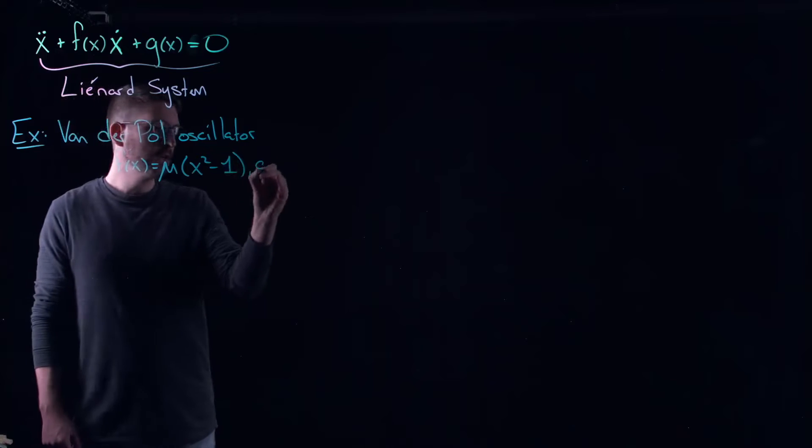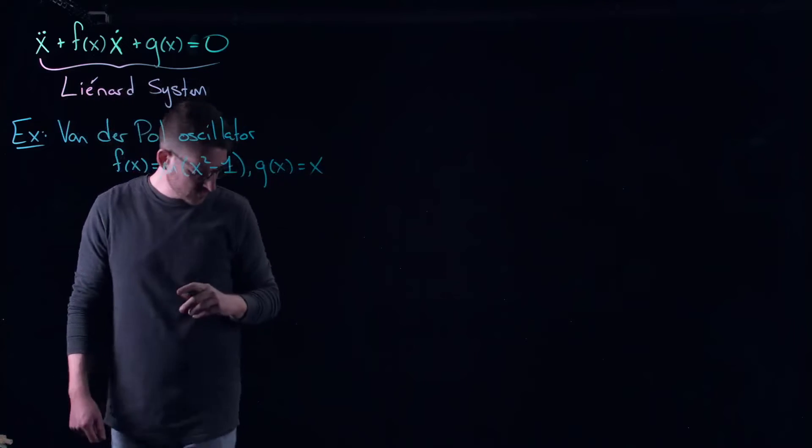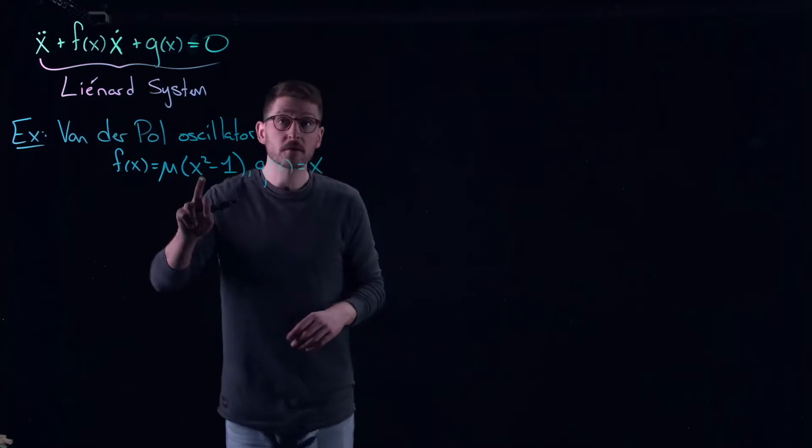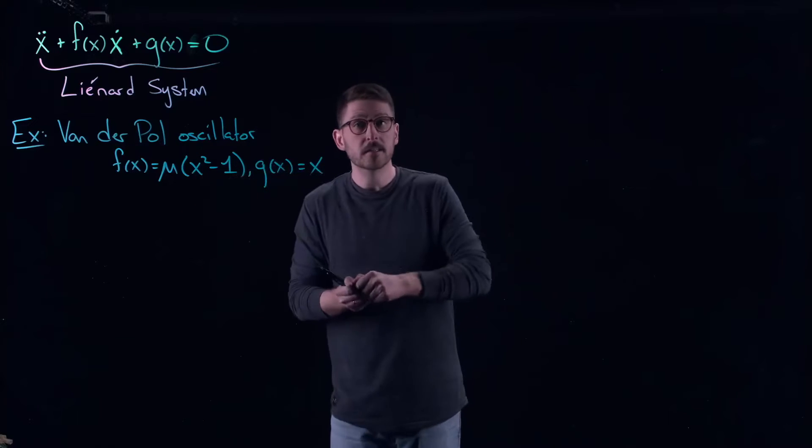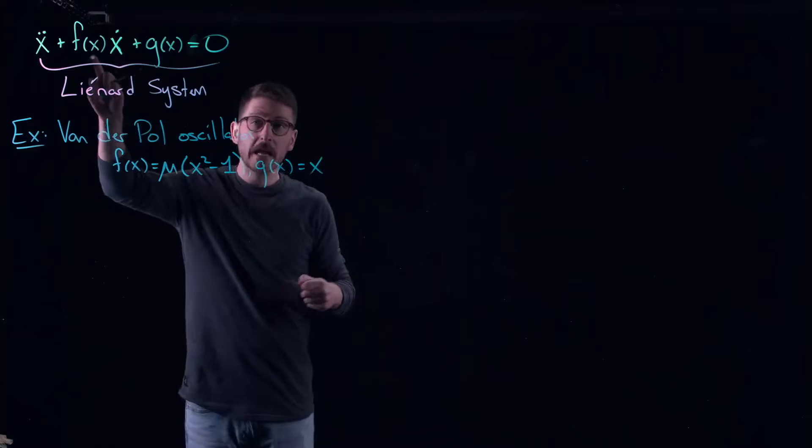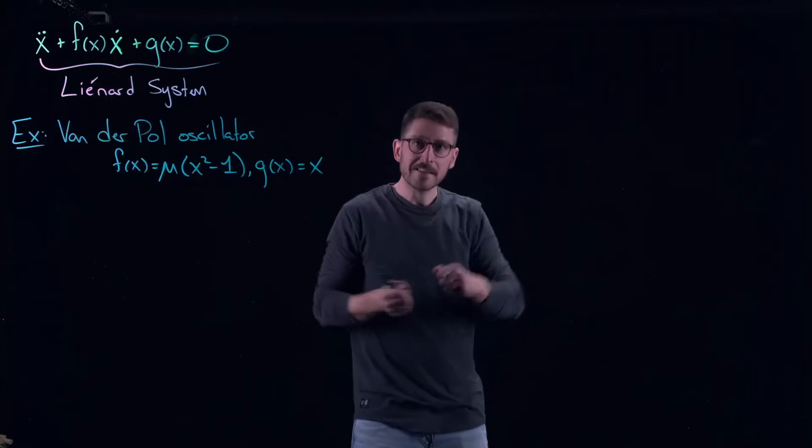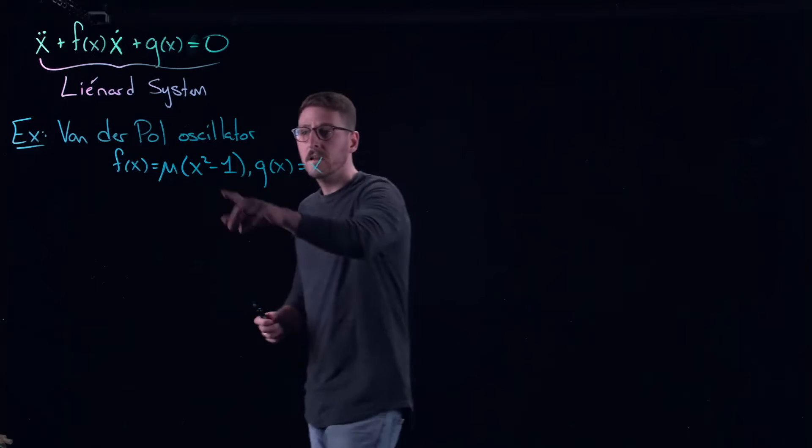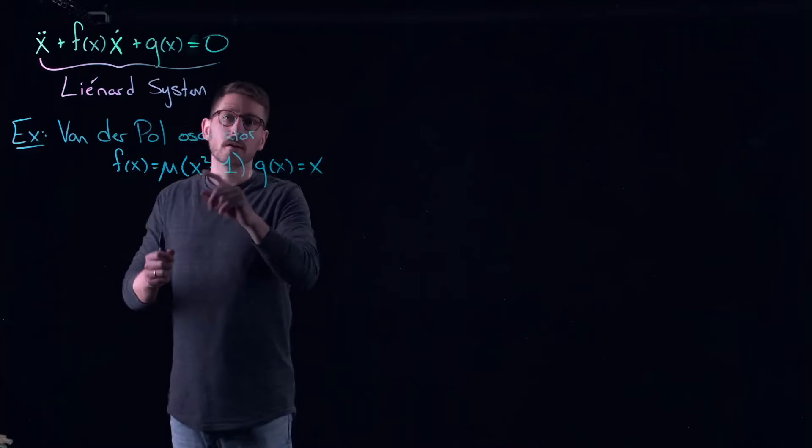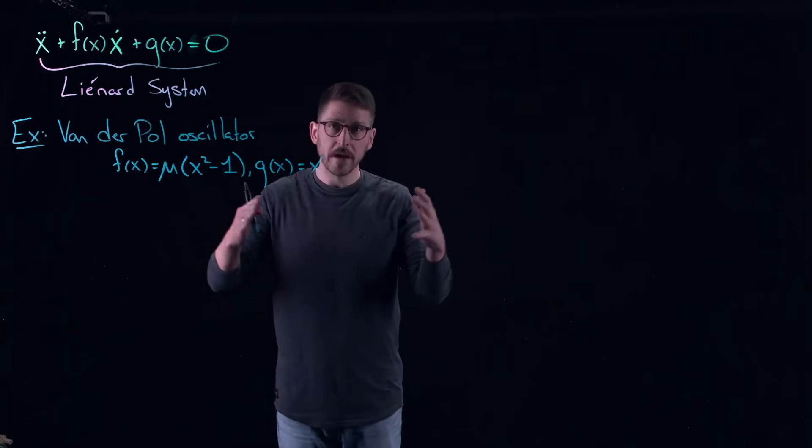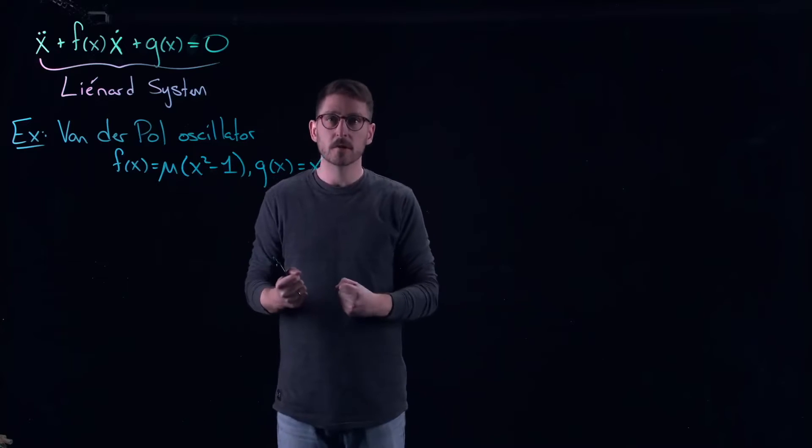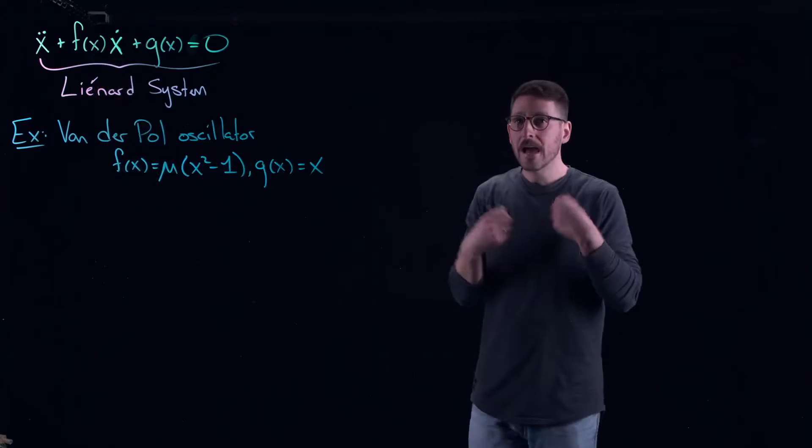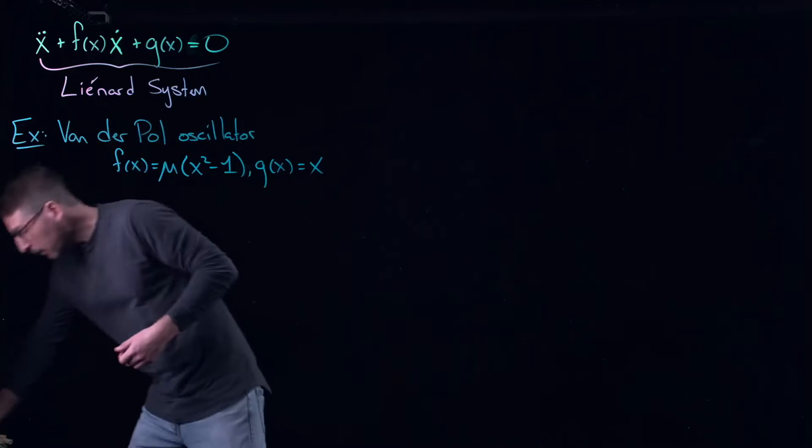And g was just equal to x. So essentially what we were seeing in that system was that for small values of x the system excites itself, so the damping is sort of negative, like negative friction. It's a weird way to think of it but it helps me. But if you become too large here then you start being pulled back down to earth and you start getting more frictional force being pulled on you and you want to slow down. We saw that the balance between these two things actually leads to an oscillation.